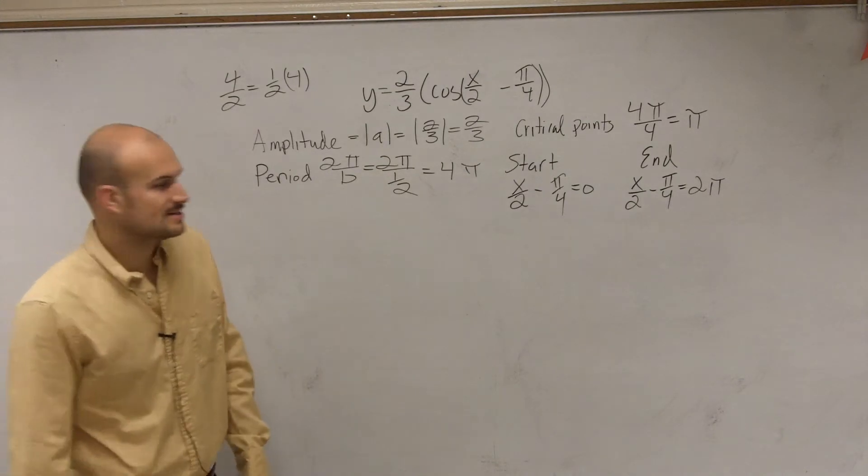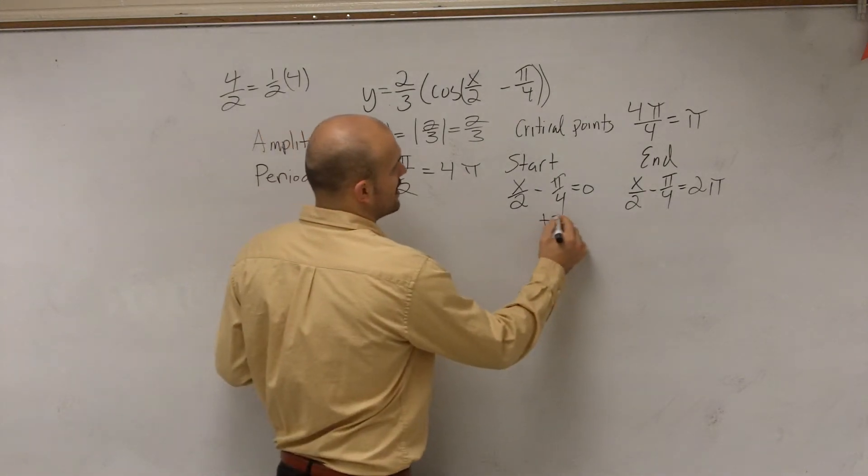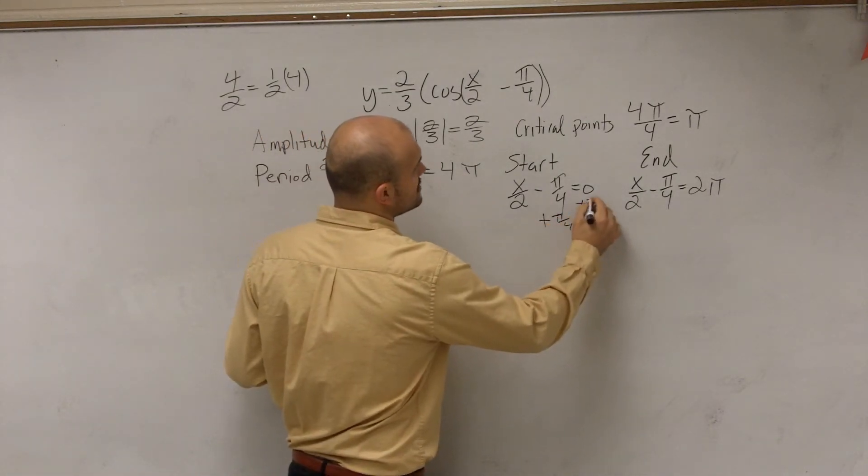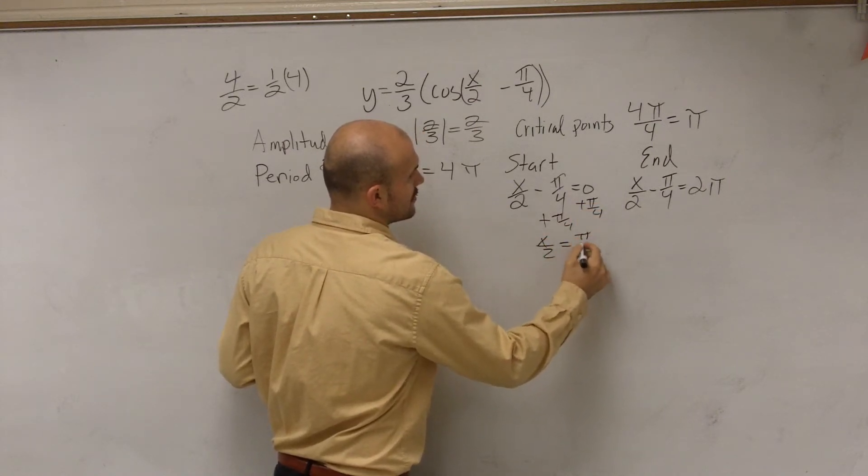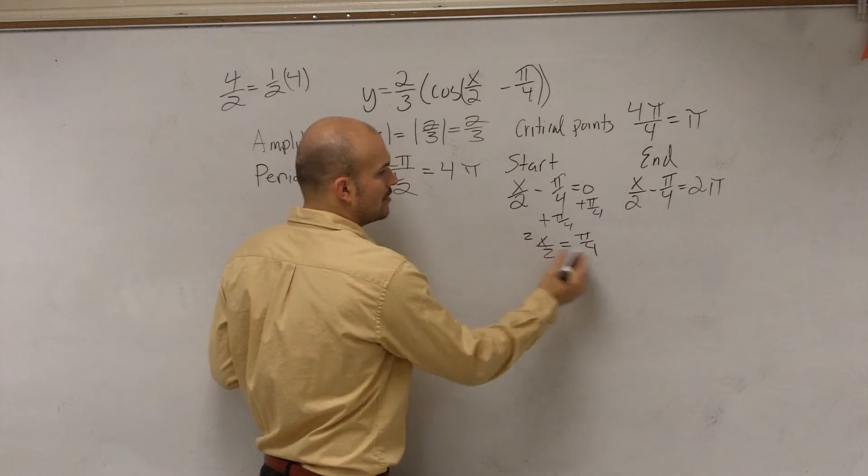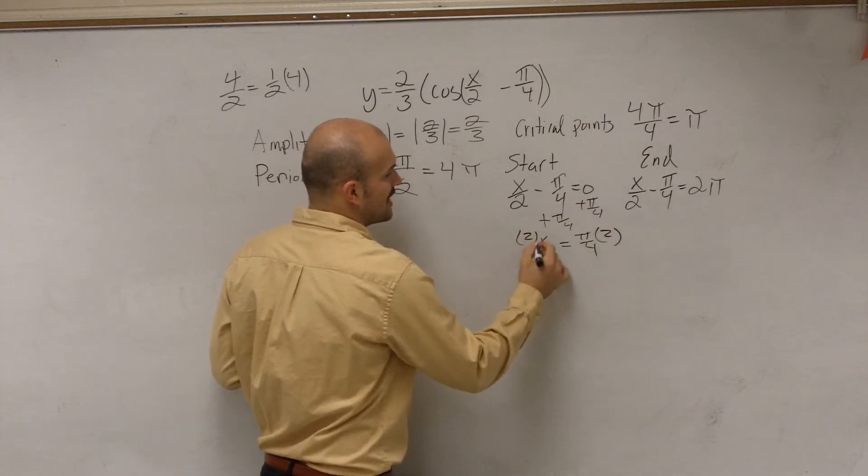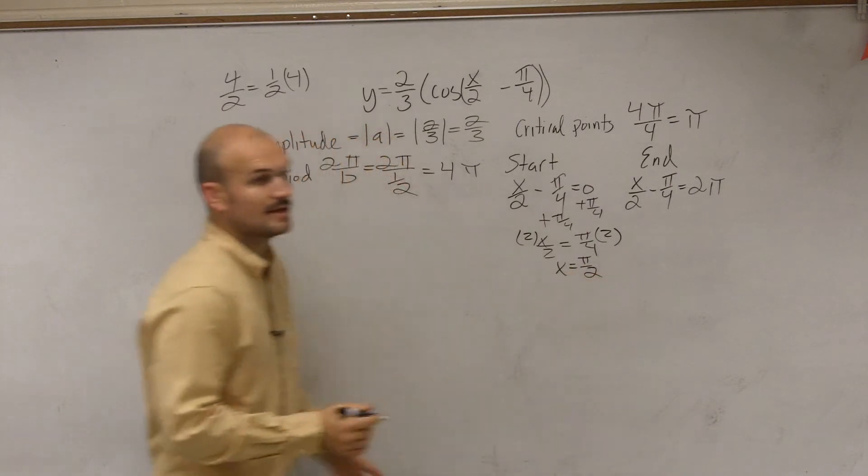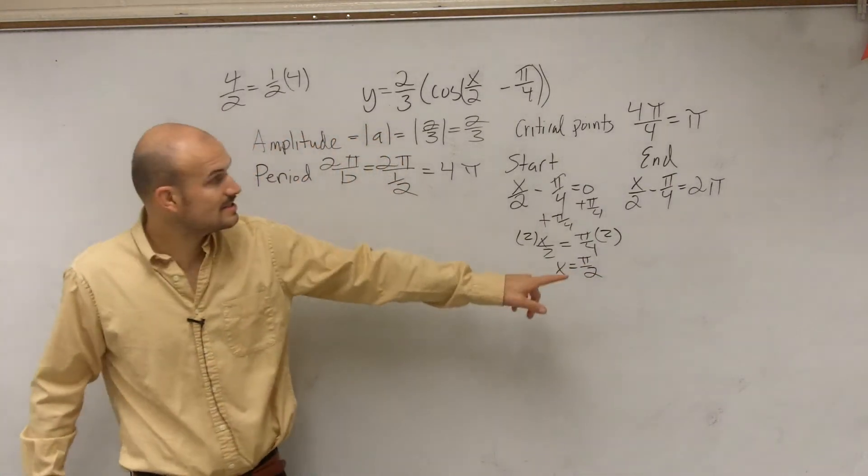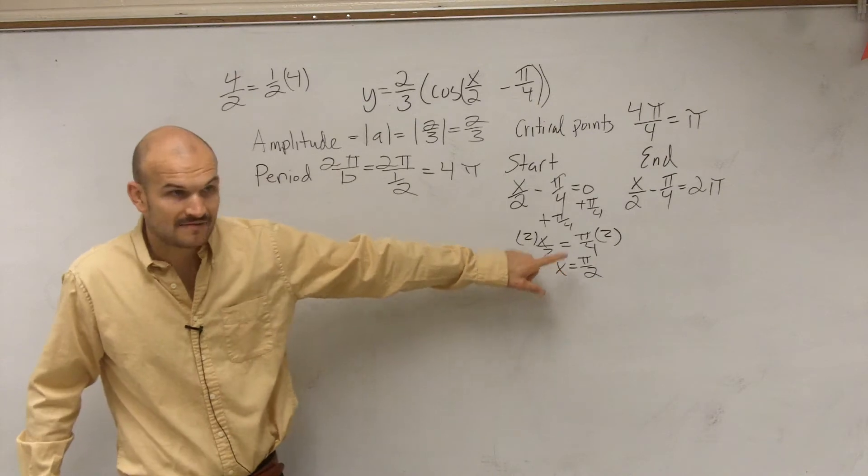So now let's go ahead and solve for x and see what we get. When we solve for x, we add pi over 4 to both sides. So we get x over 2 equals pi over 4, multiply by 2 on both sides and you get x equals pi halves. That means my graph, rather than starting at pi over 4, is going to start at pi halves.